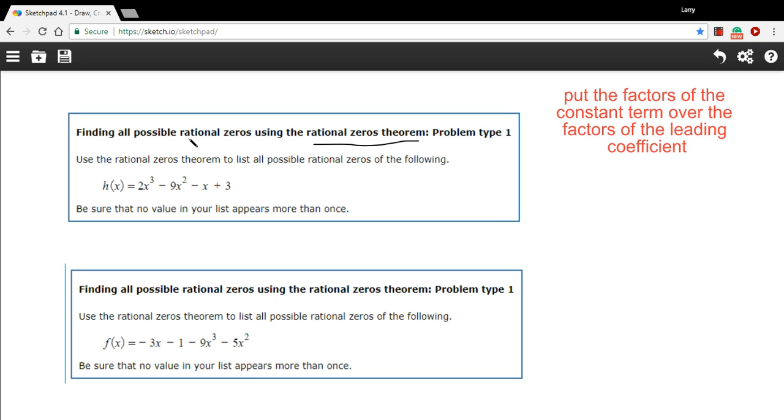Then if you wanted to find the zeros, you could test them in the function from that list. Let me show you how this works. It's not too tough. All you need to do is identify the constant term and then the leading coefficient.